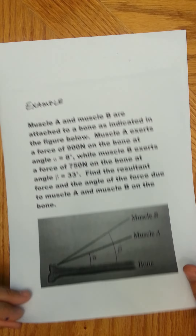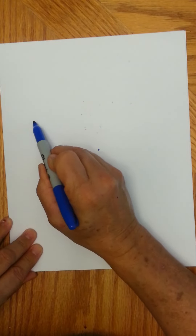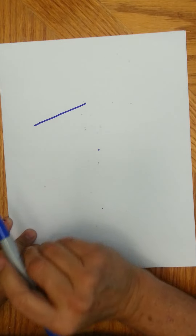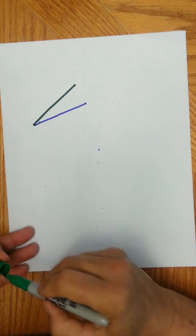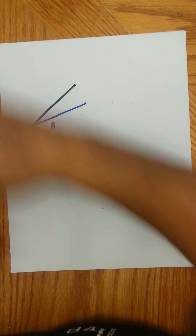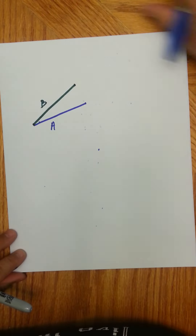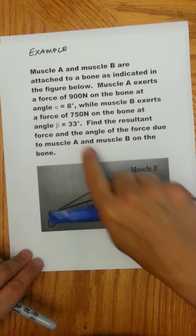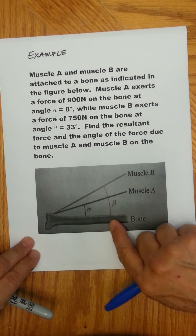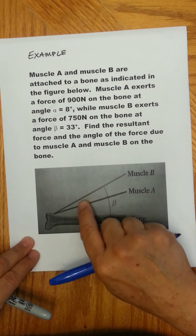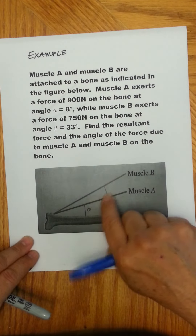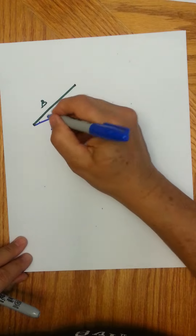We're going to do this a different way using the law of cosines. We have muscle A and muscle B drawn as vectors from the same point. Beta is 33 degrees and alpha is 8 degrees, so the angle between the two forces is 33 minus 8, which is 25 degrees.